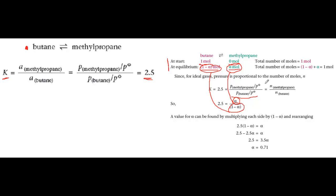So now we have this expression. We put in the value of K, which is 2.5, and that gives us a simple algebraic expression in terms of alpha. And we can solve this simple algebraic equation to get a value for alpha, which comes to 0.71.